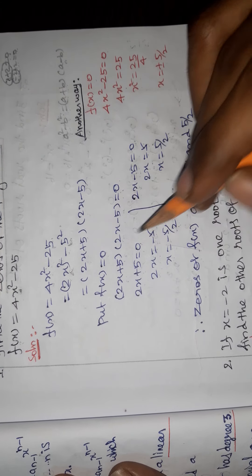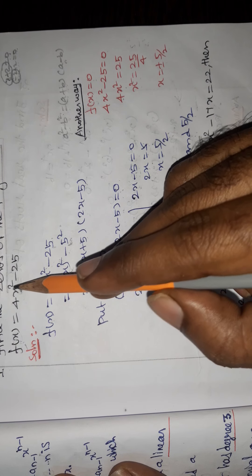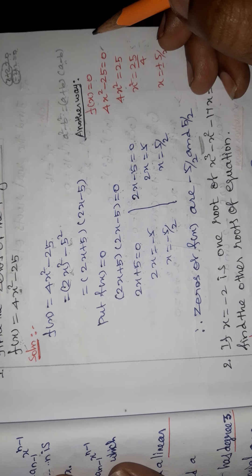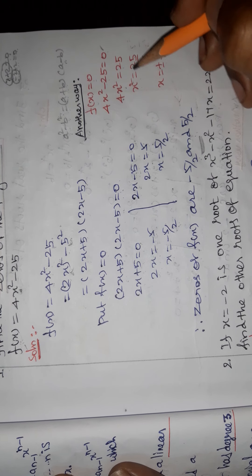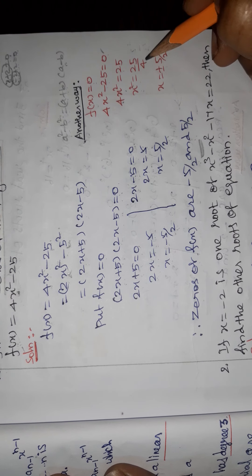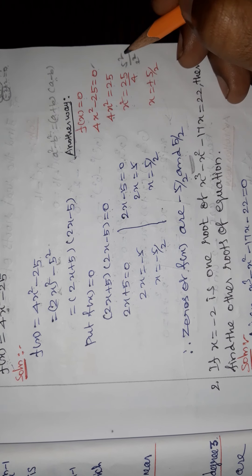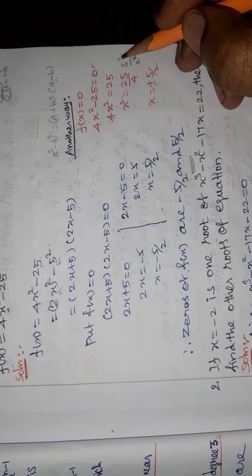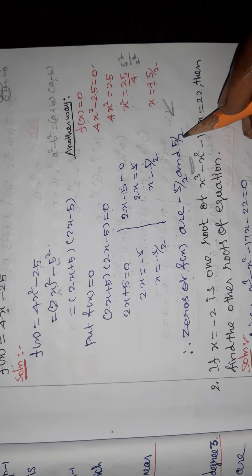It is another way — an alternative method. Set f(x) = 0, so 4x² - 25 = 0. Then 4x² = 25. Taking square root on both sides, the square root cancels and we get x = ±√(25/4), which gives x = ±5/2. Therefore, the zeros of f(x) are -5/2 and +5/2.